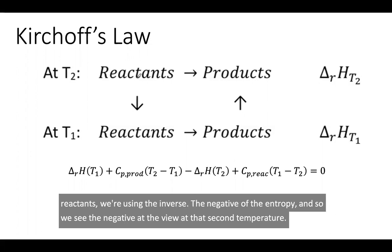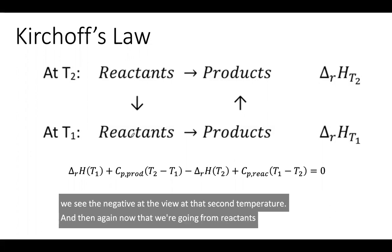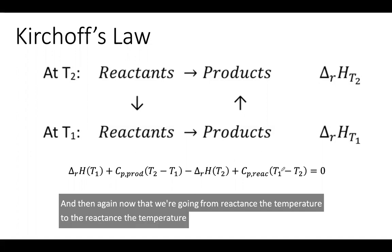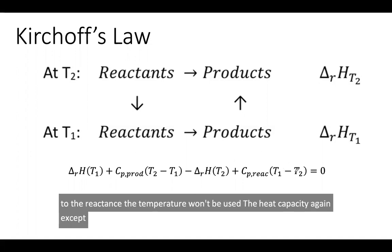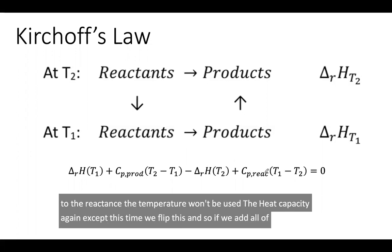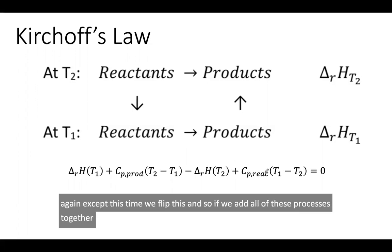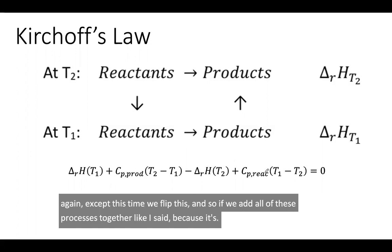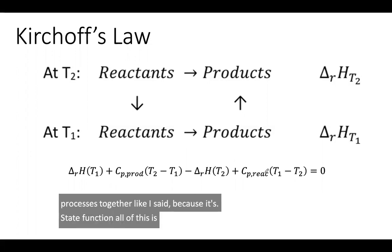Now that we're going from reactants at temperature two to the reactants at temperature one, we use the heat capacity again, except this time we flip this. If we add all of these processes together, because it's a state function, all of this is involving state functions, ultimately the total change should be zero.